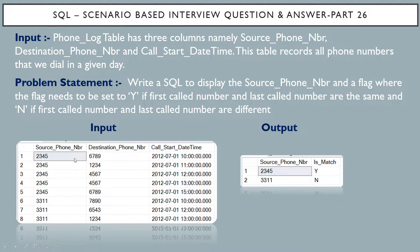First, the input table. We have the phone log table and it has three columns: source phone number, destination phone number, and call start date time. This table records all the phone numbers that we dial in a given day. For source phone number 2345, we have a total of 5 entries, and that source phone number has dialed to different destination phone numbers: 6789, 1234, and so on.